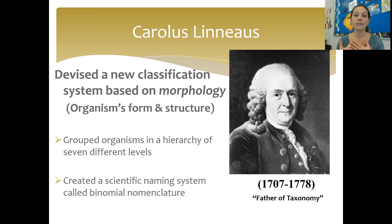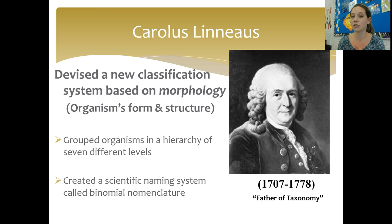Then Carolus Linnaeus came along and devised a new classification system based on morphology. Morphology is an organism's form and structure — its anatomy. Classification based on morphology was a step up from what Aristotle was doing. That's why we call him the father of taxonomy. He did two big things: he grouped organisms into a hierarchy of seven different levels, and he created a scientific naming system called binomial nomenclature that we still use today.